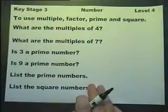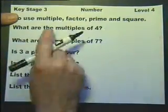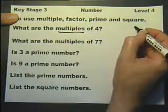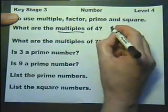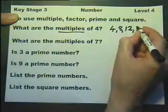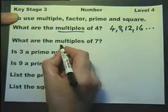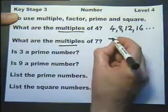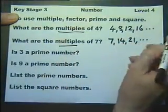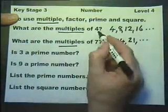Using the terms multiple, factor, prime, and square. So what are the multiples of four? Well multiples is just your tables. So the multiples of four are the numbers in the four times table. So you've got four, eight, twelve, sixteen, on and on and on to infinity. What are the multiples of seven? Well then you've got your seven times table, on and on and on to infinity. So all we've got to do is remember the word multiples means your tables for a particular number.